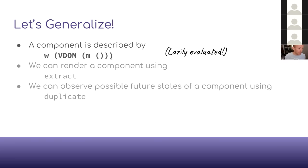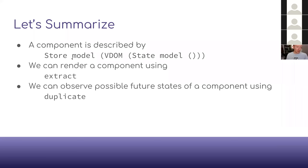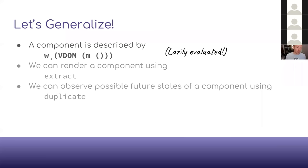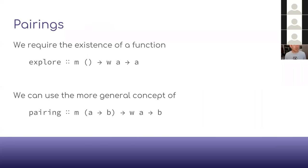To summarize: a component is going to be a Store of models of V-DOM of State of Model of Unit. We can render a component using extract and observe the possible future states using duplicate. Now, a question: does this say anything about being able to go back in time to a previous state? If you want an undo operation, your state has to have that built into the model — your state graph has to have cycles in it, but nothing prevents that.